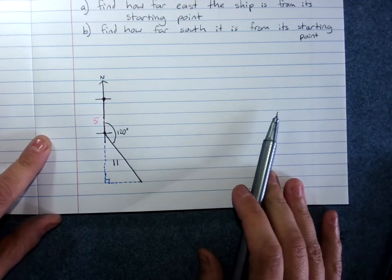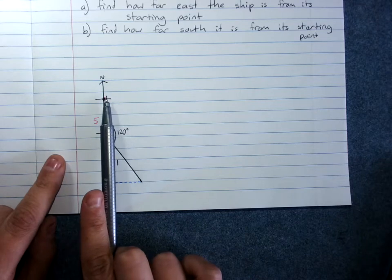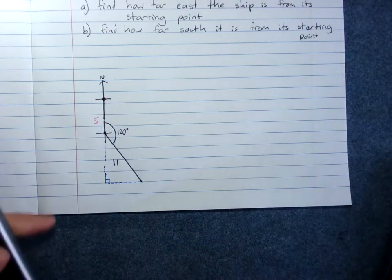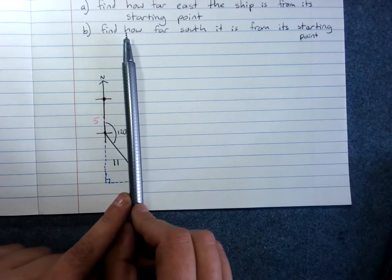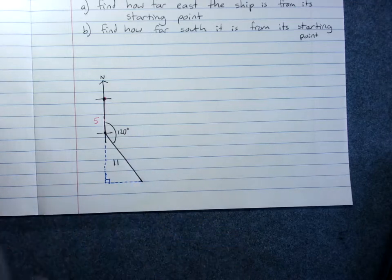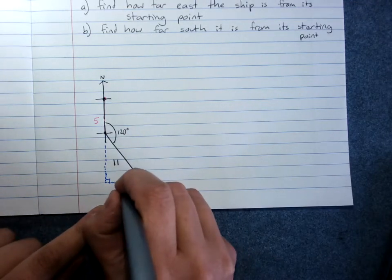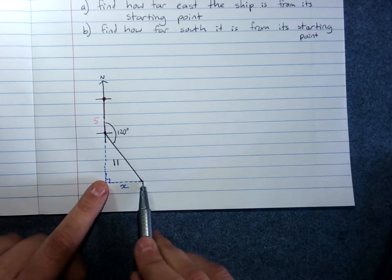When we say how far east it is from its starting point, we mean directly east. That is, how far towards east do I have to go to get to where the ship is now. So you can see that this distance here, x, is the displacement east. How far east the ship is.